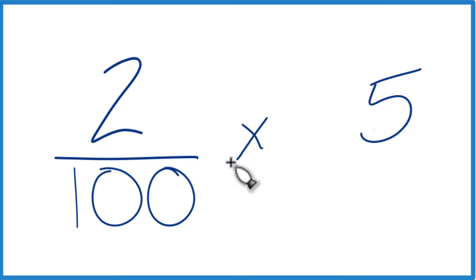So 2% of 5, you'd have 2 over 100 times 5. You can think about 5 as 5 over 1, still equal to 5. It's just now we multiply the numerators and then the denominators.